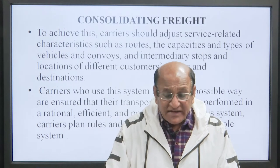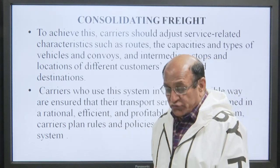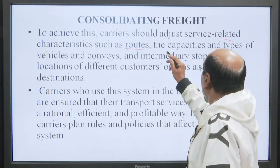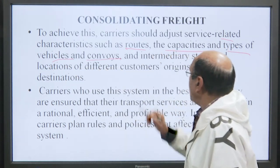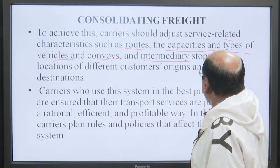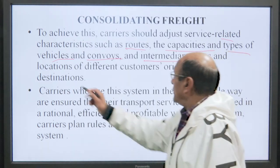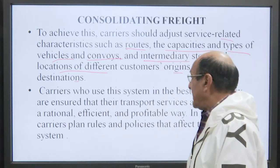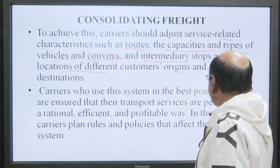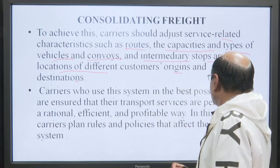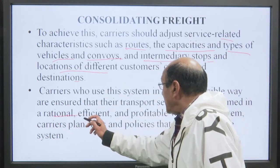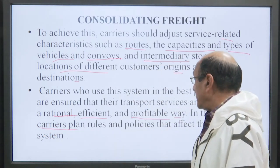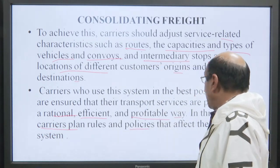To achieve this, carriers should adjust service-related statistics such as routes, capacities, types of vehicles, intermediary stops, and locations of different customers' origins and destinations. Carriers who use this system in the best possible way ensure that their transport services are performed in a rational, efficient, and profitable way. In this system, carriers plan rules and policies that affect the whole system.